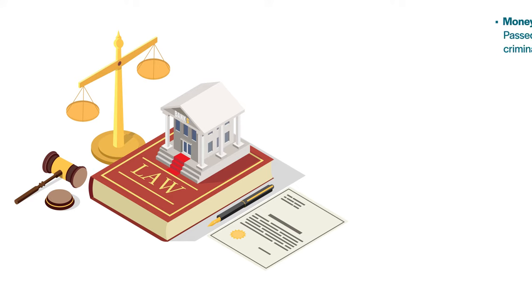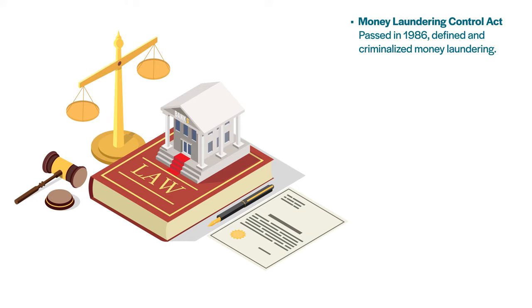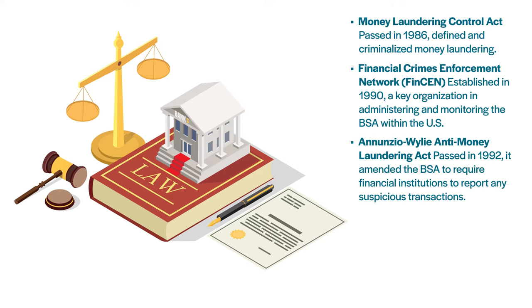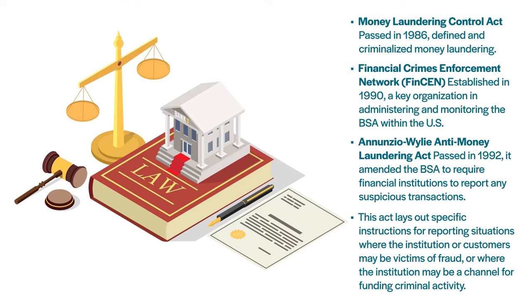Following the BSA, there was the Money Laundering Control Act in 1986, which defined and criminalized money laundering; the creation of the Financial Crimes Enforcement Network, or FinCEN, in 1990, which is a key organization in administering and monitoring the BSA within the U.S.; and the 1992 Annunzio-Wiley Anti-Money Laundering Act, which amended the BSA to require that financial institutions must report any suspicious transactions. This act lays out specific instructions for reporting situations where the institution or customers may be victims of fraud or where the institution may be a channel for funding criminal activity such as terrorist financing or money laundering.